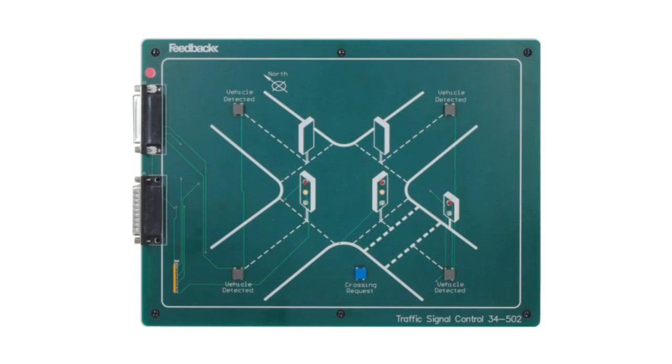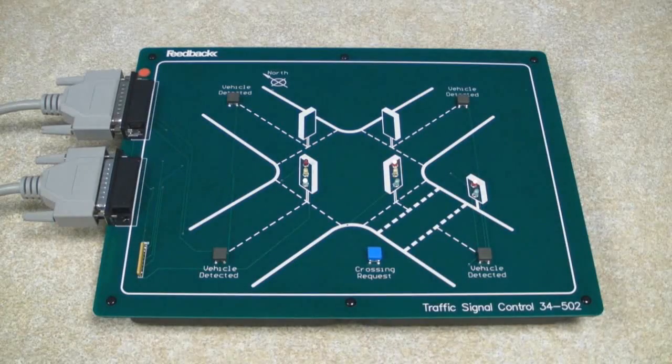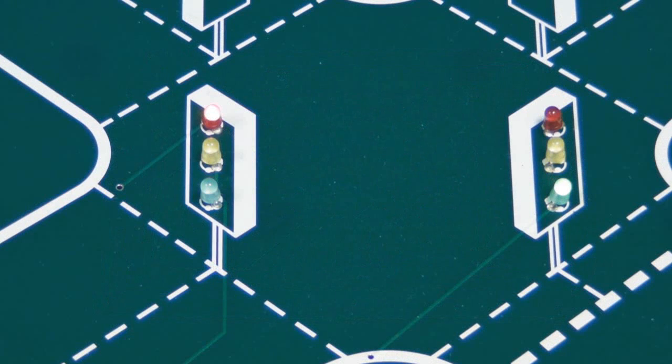The Traffic Lights module. The Traffic Lights module is a representation of a 4-way intersection.